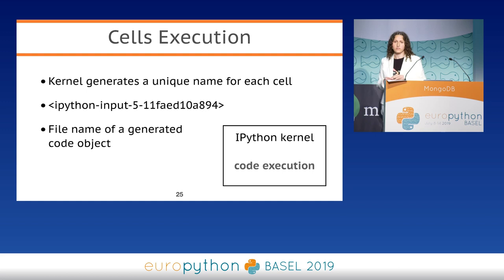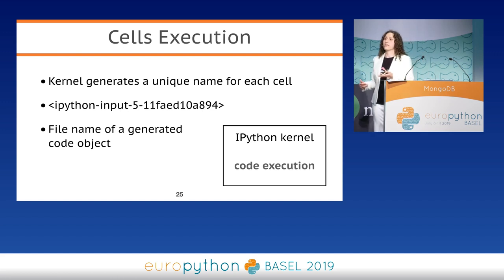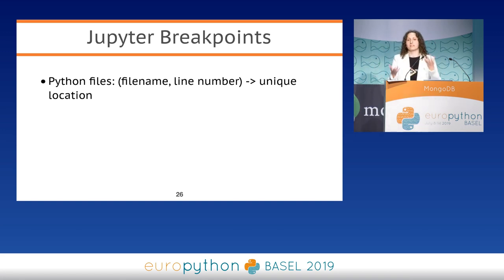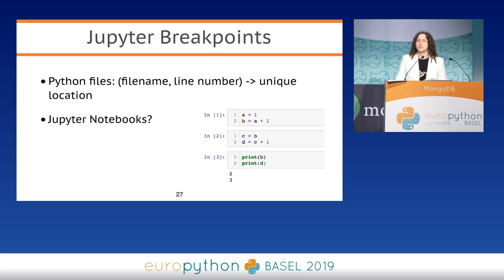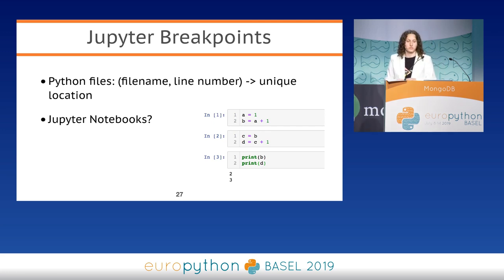Usually the kernel hides this information from users, but it stores all generated code objects in its internals. That's why when you define some function in the first cell and execute it, you can call that function in another cell because IPython kernel saved it for you. To implement breakpoints in usual Python files, we use the pair filename + line number to define a place in source code, because this pair uniquely identifies a location. But in Jupyter notebooks, it doesn't work, because each cell is a separate code snippet with its own line numbers, and all cells are located in the same file. So we can't reuse the same pair for Jupyter breakpoints.